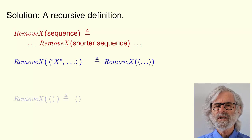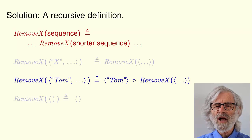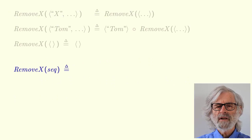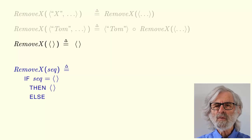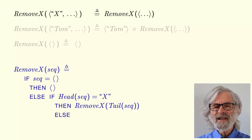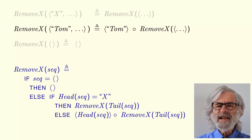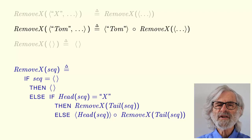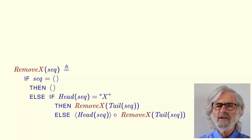RemoveX of a sequence beginning with x equals RemoveX applied to the rest of the sequence. And RemoveX of a sequence beginning with another value, such as tom, equals the sequence that begins with tom and is followed by the result of applying RemoveX to the rest of the sequence. Here's the complete TLA+ definition. If seq is the empty sequence, then RemoveX of seq equals the empty sequence. Otherwise, if the head of seq equals the string x, then RemoveX of seq equals RemoveX of the tail of seq. Else, it equals the sequence obtained by prepending the head of seq to the front of RemoveX of the tail of seq. This is a recursive definition because the symbol we're defining appears in its definition.